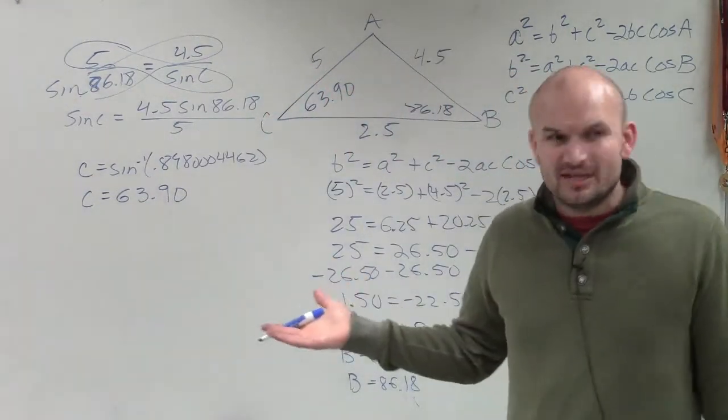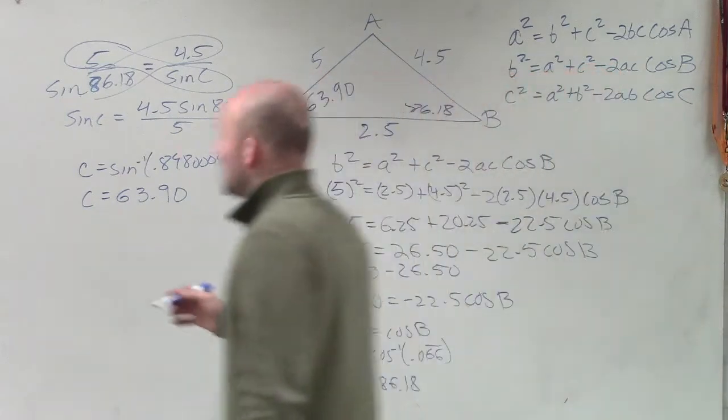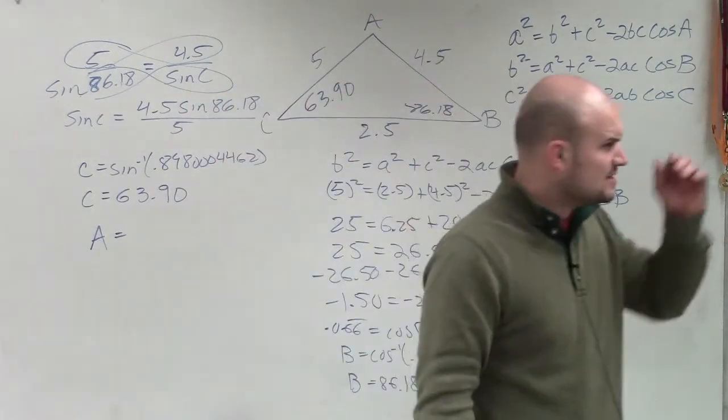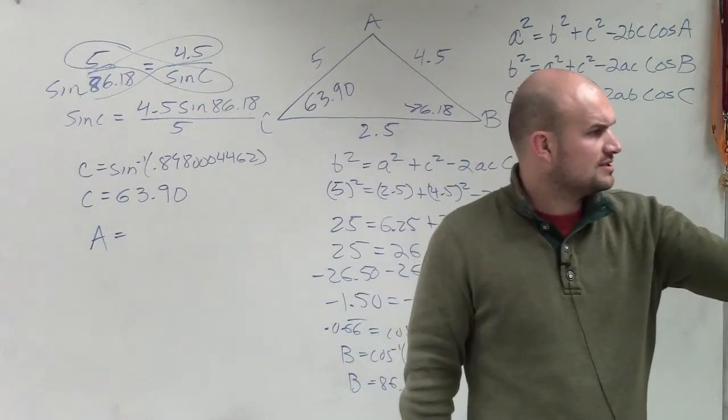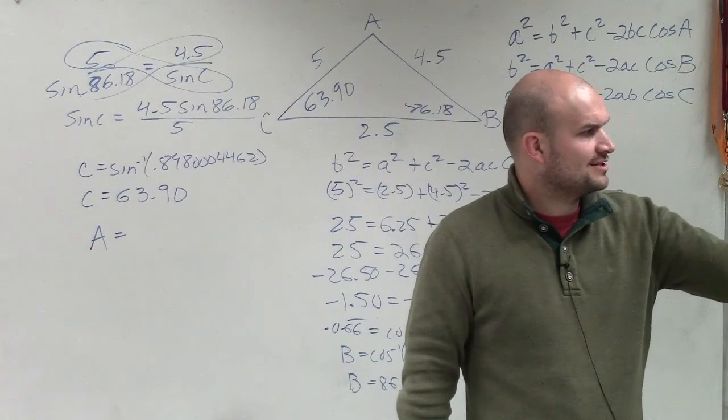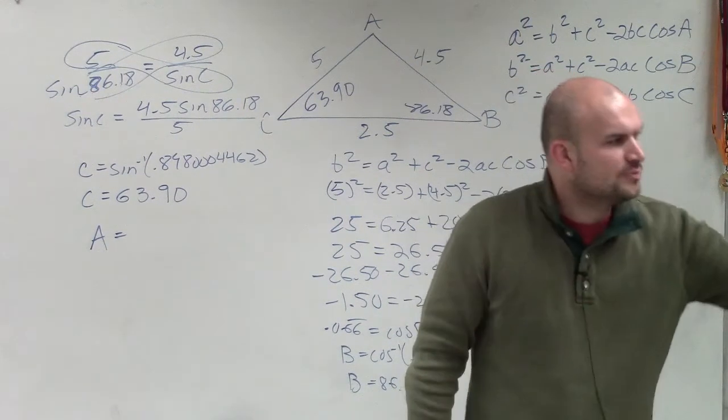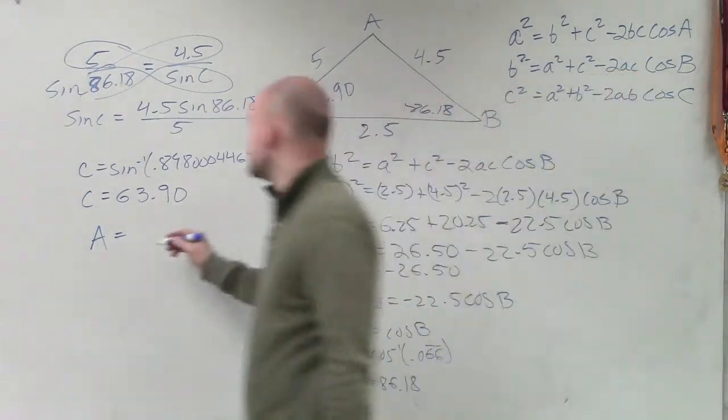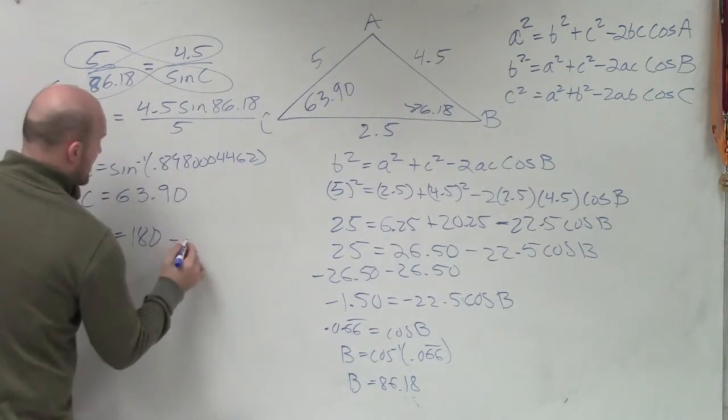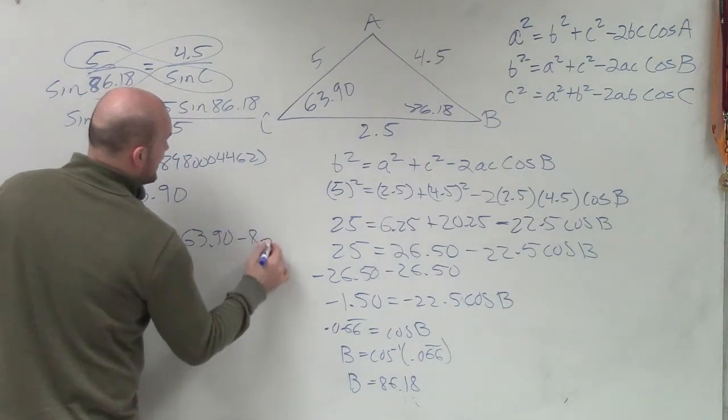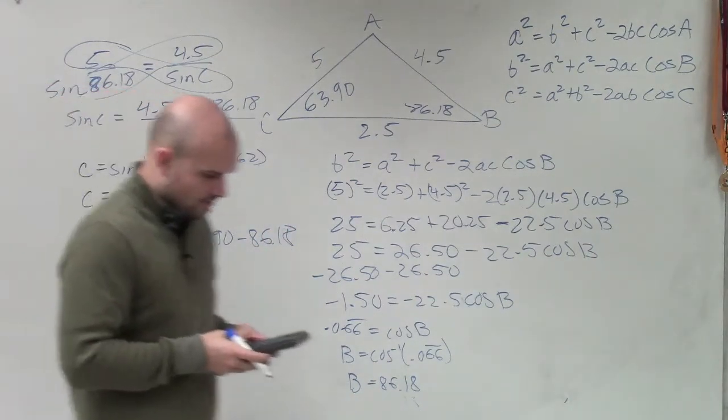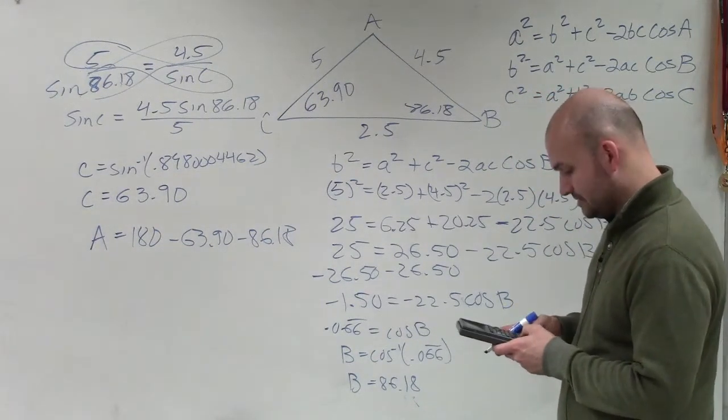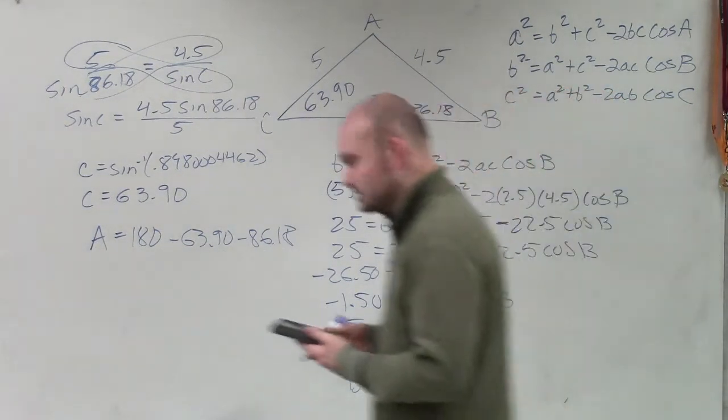Now, the last thing to find a, we can use the Law of Sines if you want to. However, it'd be much simpler. Rather than doing Law of Sines or Law of Cosines for a missing angle a, we can just take 180 - 63.90 - 86.18. So 180 - 63.90 - 86.18, and you get 29.92.